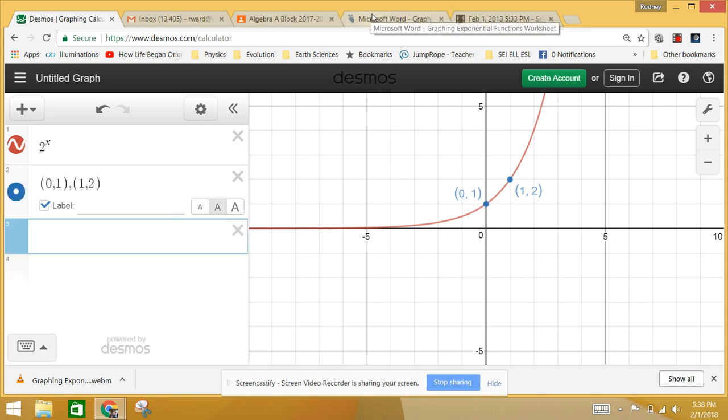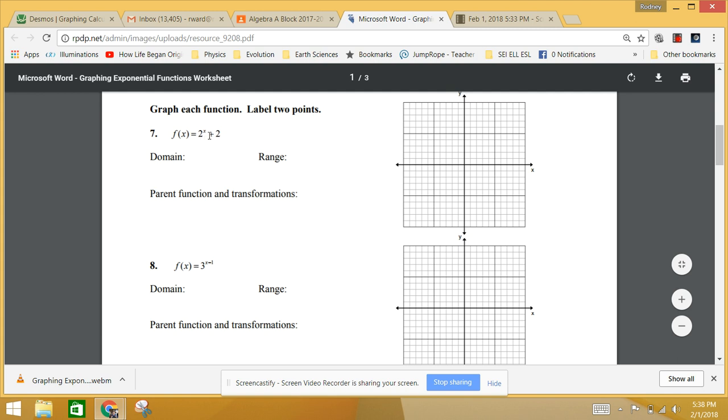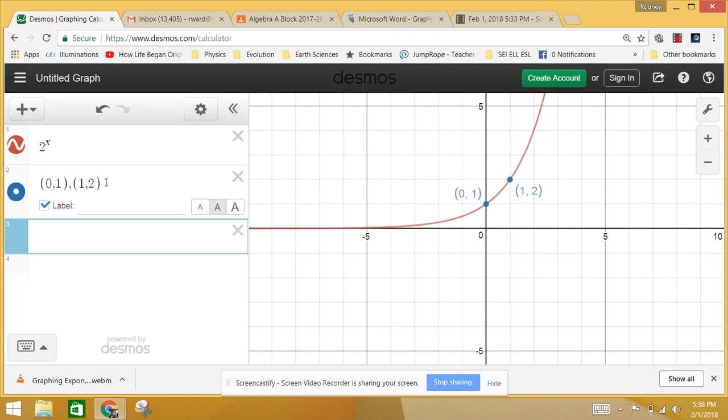Now we want to look at the transformations. It's 2 to the x plus 2. This plus 2 out here means that I'm adding 2 to my base function of 2 to the x. I'm not adding anything or subtracting anything from x, I'm adding to my base function. So I'm going to take these 2 points here, and what that means is I'm adding to the y values. I'm going to add plus 2 to that y value and plus 2 to that y value. So I now have a y value that is at (0, 3), and (1, 4).